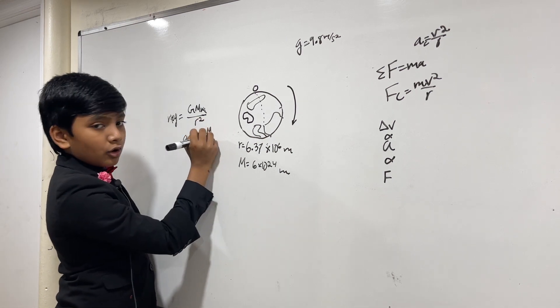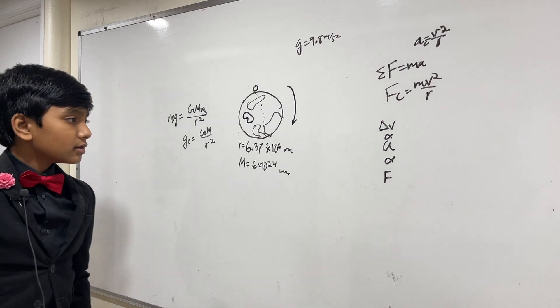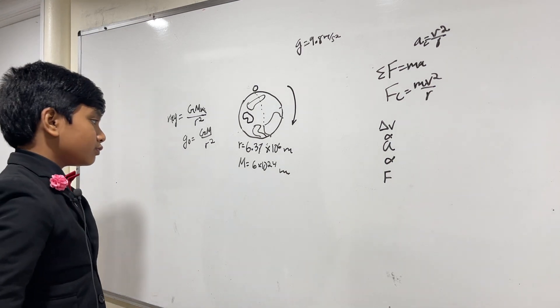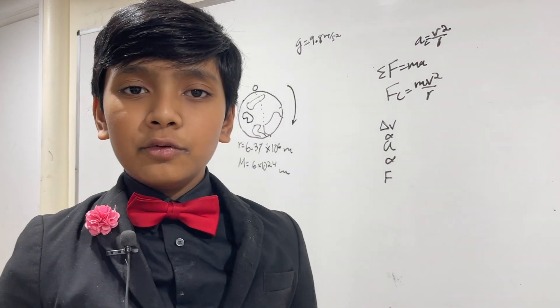We have mg is equal to G big M little m over r squared. Now, cancel m, and here's our absolute G equation: G big M over r squared. Alright. So, now, using that formula, let's get right to it.